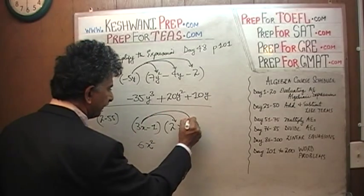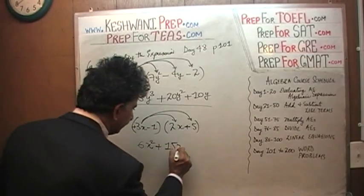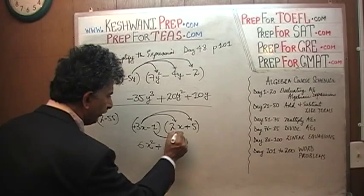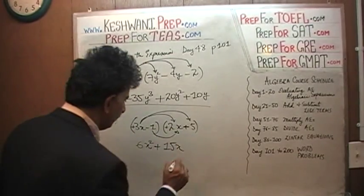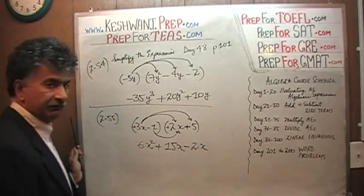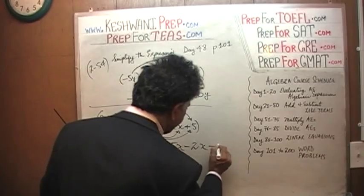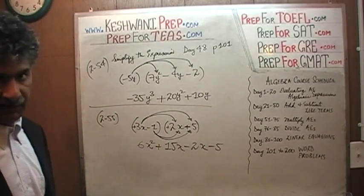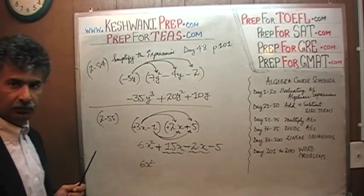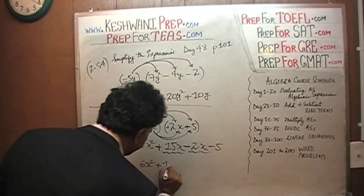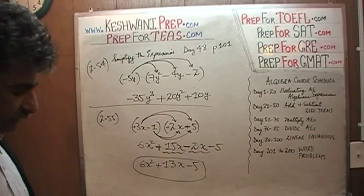Now we take 3x and multiply it by the second term: 3 times 5 is 15, and plus times plus is plus, so plus 15x. Now we take negative 1 and multiply negative 1 by positive 2x: negative 1 times positive 2 is negative 2x. And finally, negative 1 times positive 5 gives us negative 5. All we have to do now is add up the like terms: the only two like terms are the x terms — 15x and negative 2x. Positive 15 and negative 2 gives us positive 13x. So the final answer is 6x squared plus 13x minus 5.